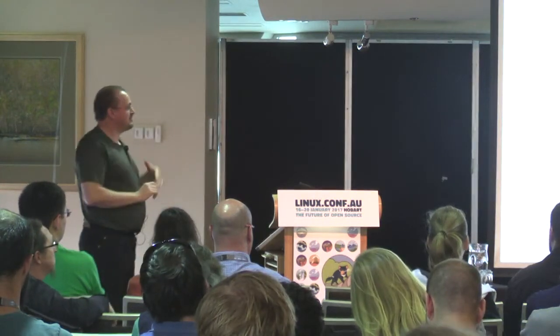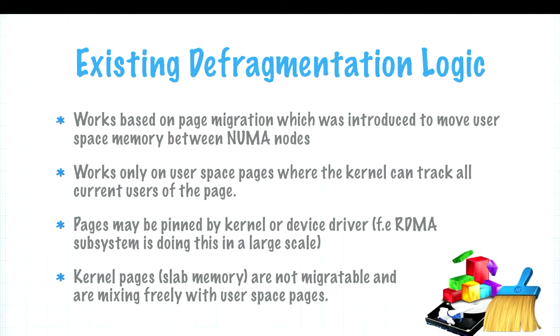To defragment, objects must be rearranged so large contiguous sections become available — possible with page migration for user pages but not for kernel objects like inodes and dentries, which pin memory throughout. The existing defragmentation logic uses an optimistic approach: attempt to find and isolate all users of a page; migrate if successful, give up if not. For NUMA this is fine as it's just an optimization, but for true defragmentation a deterministic guarantee is needed.